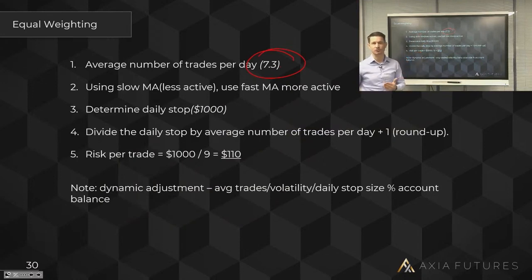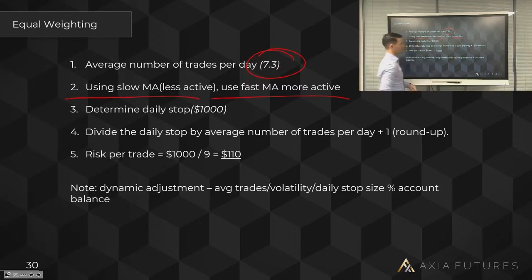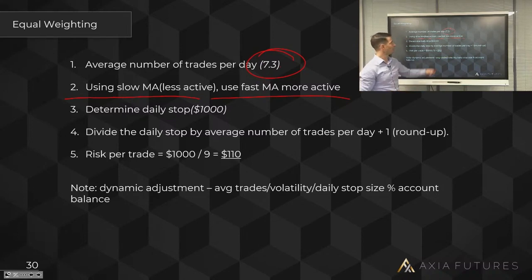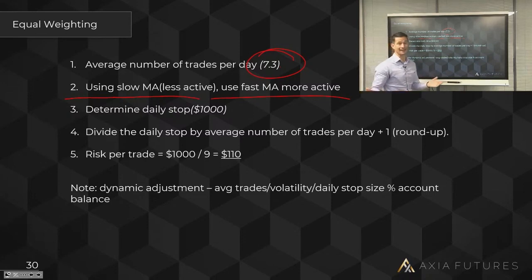How it works: work out the number of average trades you do on a daily basis — for example, 7.3. If you're a very active trader, use a fast moving average. If you're an investor or swing trader doing perhaps five to ten trades a week, use a slow moving average. If you're very active and one day you do 7, the next 15, the next 2, the next 20 — you need a moving average to keep up and adjust with your level of activity.